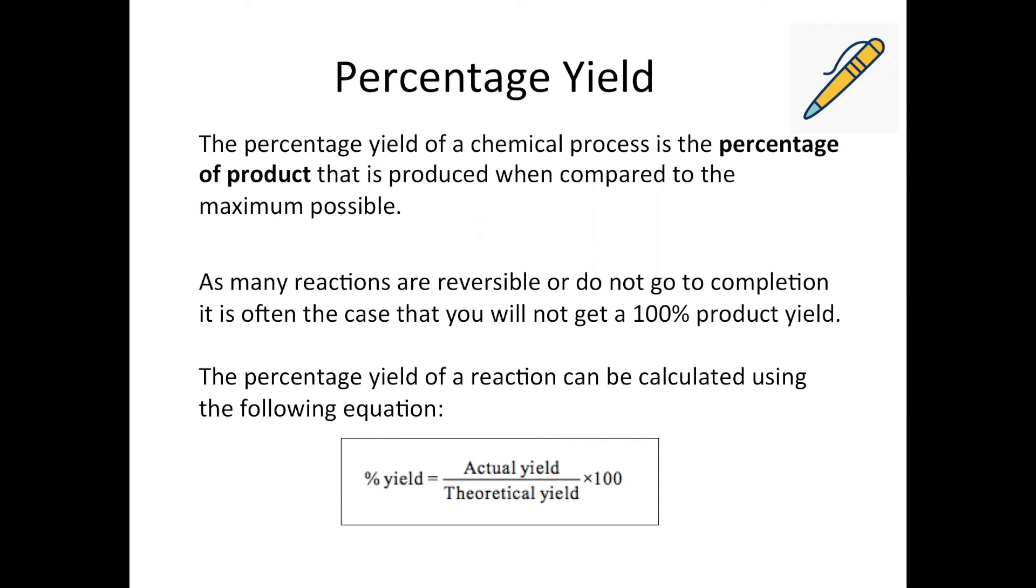There are ways you can try and improve the economy of the reaction if it's got a low percentage yield, and there will be some reactions that still get done with a tiny percentage yield just because they're essential enough, but ideally the higher percentage yield you can get from your reaction, the better, because then that will maximize your product and minimize any wastage, which also helps with the environmental impact.